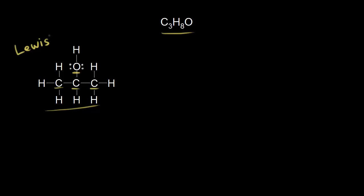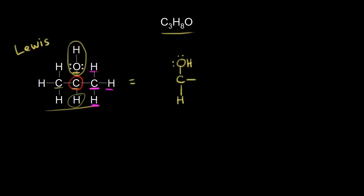We could represent this molecule in different ways — we could condense this Lewis structure a little bit. This is equal to the structure I'm about to draw. We'll focus on the carbon circled in red. That carbon is bonded to an OH, so we write OH here with lone pairs of electrons on the oxygen. That carbon is also bonded to a hydrogen, and on the right side that carbon in red is bonded to a carbon in magenta, which is bonded to three other hydrogens, so we represent that as CH3.